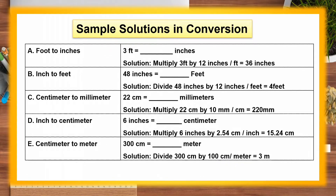Sample solutions in conversion. A. Foot to inches: 3 feet equals how many inches? Solution: multiply 3 feet by 12 inches. Therefore, 3 feet equals 36 inches. B. Inch to feet: 48 inches equals how many feet? Solution: divide 48 inches by 12 inches. Therefore, 48 inches equals 4 feet. C. Centimeter to millimeter: 22 centimeters equals how many millimeters? Solution: multiply 22 centimeters by 10 millimeters. Therefore, 22 centimeters equals 220 millimeters.